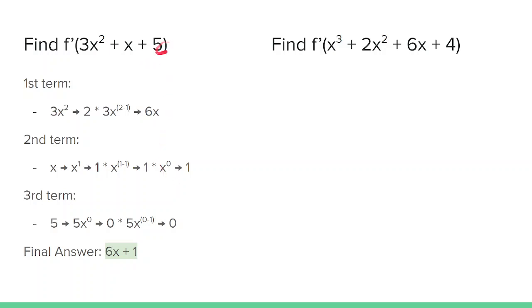The third term is a constant. All constant values, such as the 4 in the next problem, have derivatives of 0. This 5 is actually 5x to the 0th. You move the 0 to the front to get 0 times 5x to the 0 minus 1. All of that doesn't matter though, because it's being multiplied by 0. So the final answer is 6x plus 1.